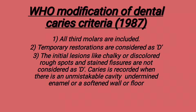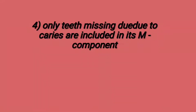WHO modified dental caries criteria in 1987. According to these criteria, all third molars are included in this index. Temporary restorations are considered as decayed. Initial lesions like chalky or discolored rough spots and stained fissures are not considered as decayed. Caries is recorded when there is an unmistakable cavity, undermined enamel, or a softened wall or floor. Only teeth missing due to caries are included in the M (missing) component.